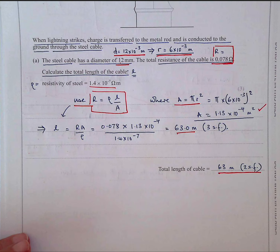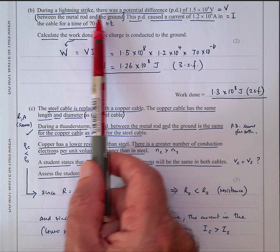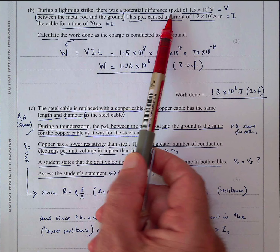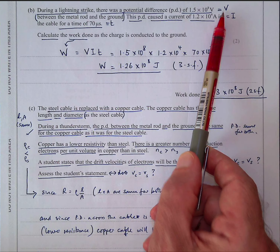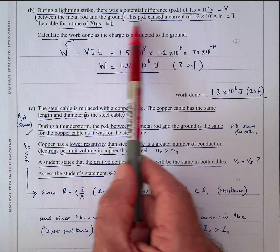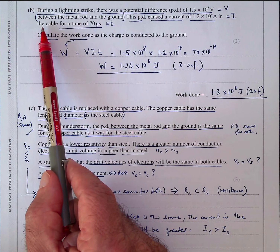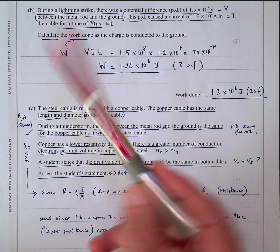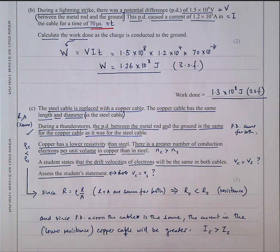The second part talks about during a lightning strike — we've had many of those recently, the biggest storm in 75 years. During the lightning strike there was a potential difference of 1.5×10⁸ volts between the metal rod and the ground, which caused a current of 1.2×10⁴ amps. That's a large current — that's why lightning can kill you. The current only lasts for a time of microseconds. I've had students forget what micro means —